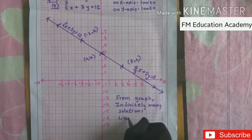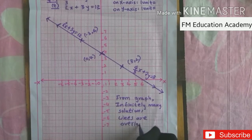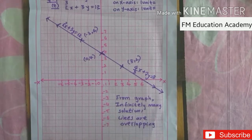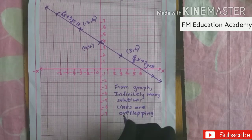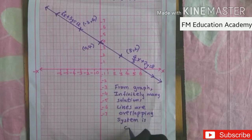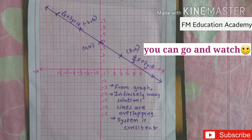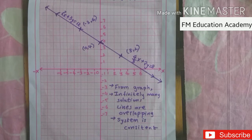From the graph, the system is consistent since it has infinitely many solutions. The question asked us to verify this, and we've confirmed it both algebraically and graphically. Videos on unique solutions and parallel lines are also available — please share and like.